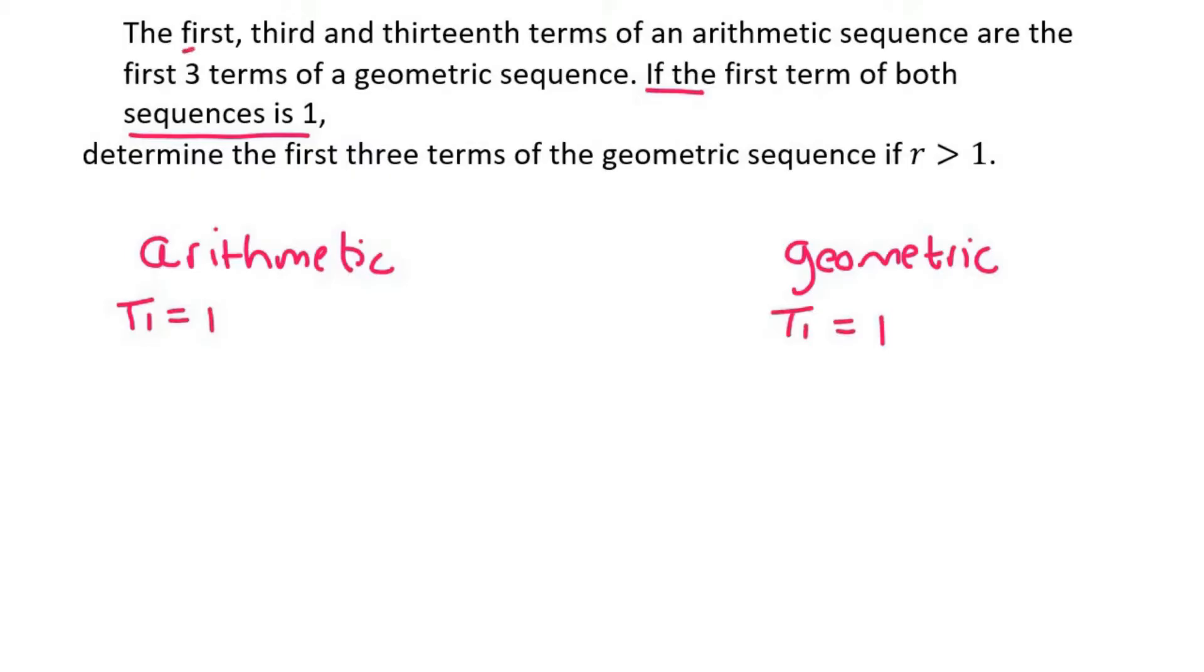Then they say that the first, third and thirteenth terms of an arithmetic sequence are the first three terms of a geometric sequence. So the third term in the arithmetic is the same as the second term of the geometric, and then the thirteenth term of the arithmetic is the same as the third term of the geometric. Make sure that when you've read this you understand what I've just done. They said that the first, third and thirteenth, here I've got them, they are the first, second and third of the geometric.